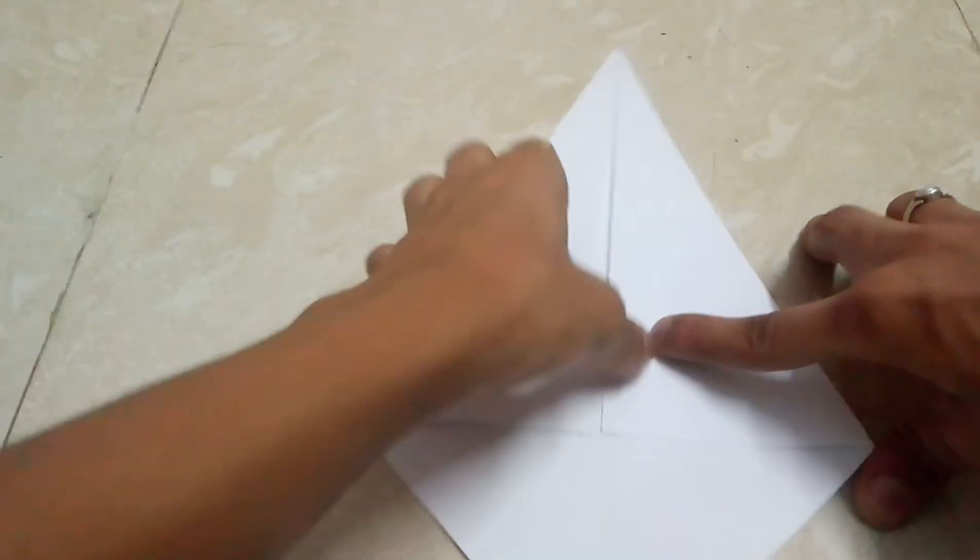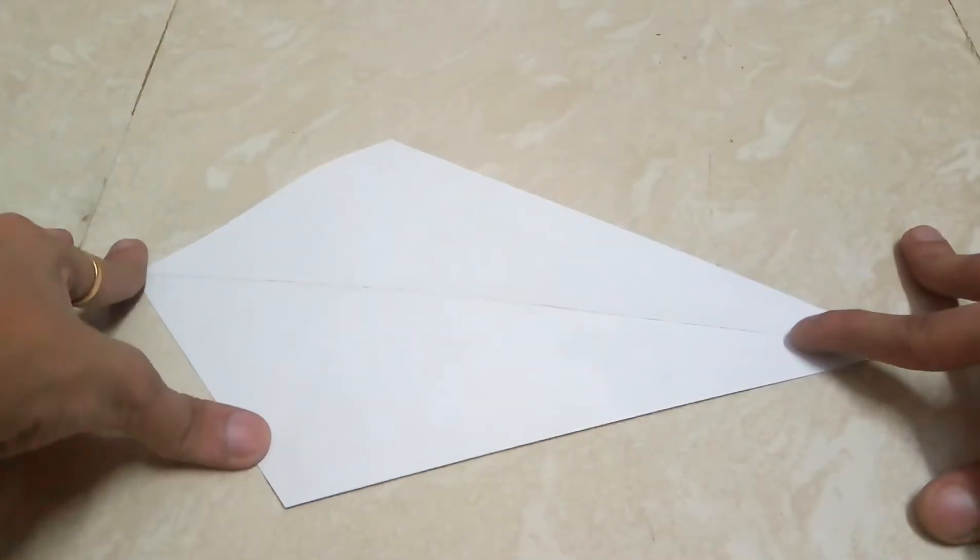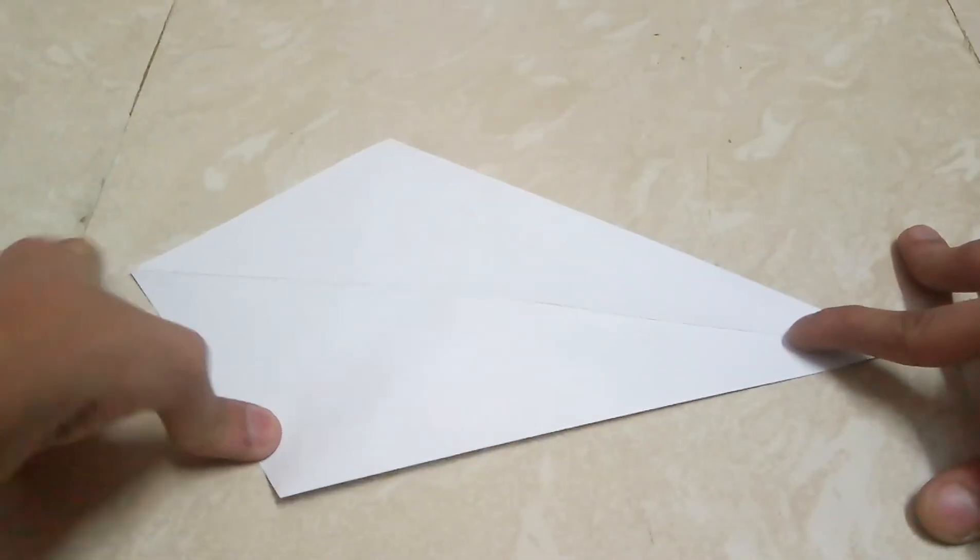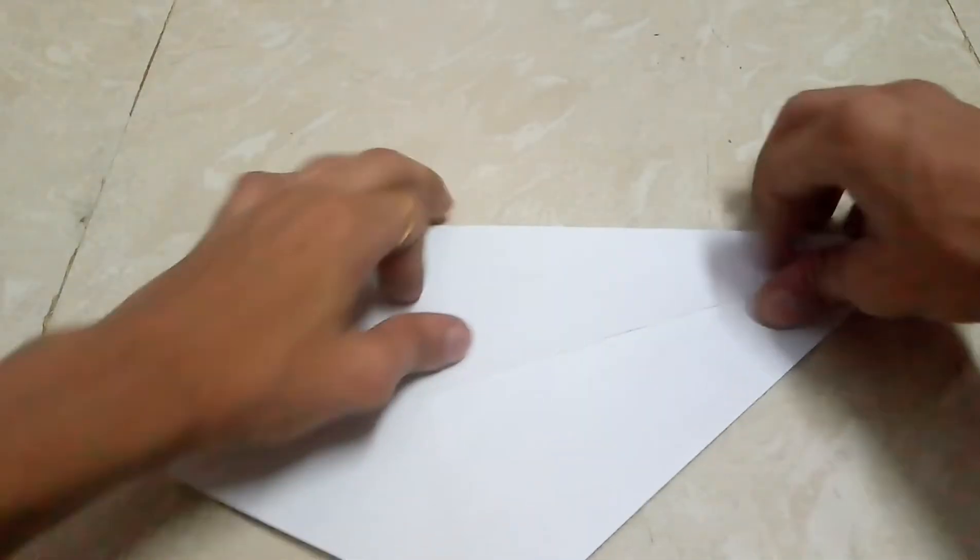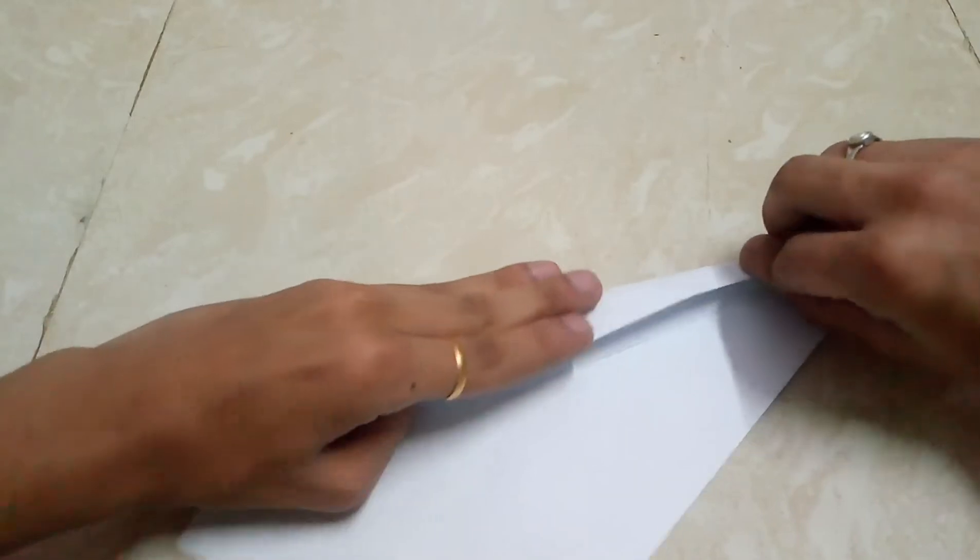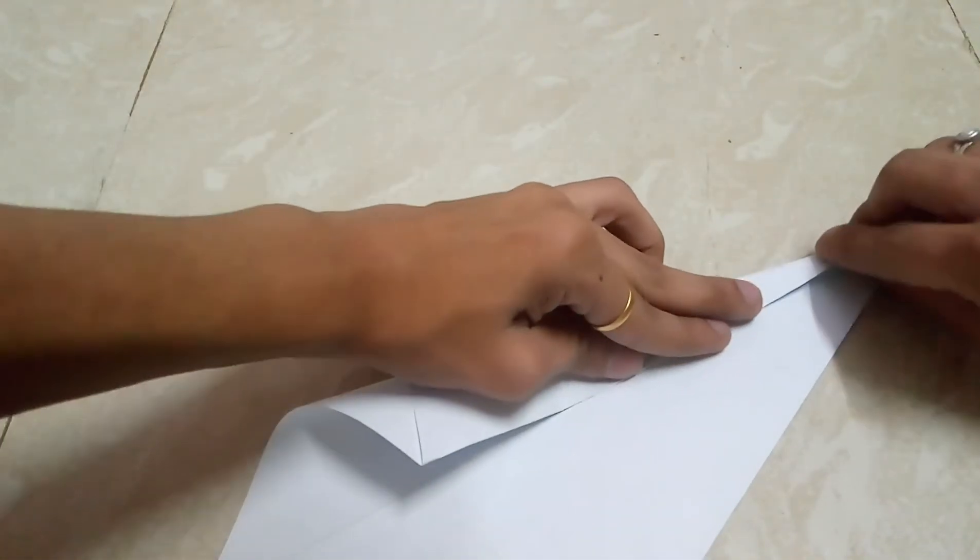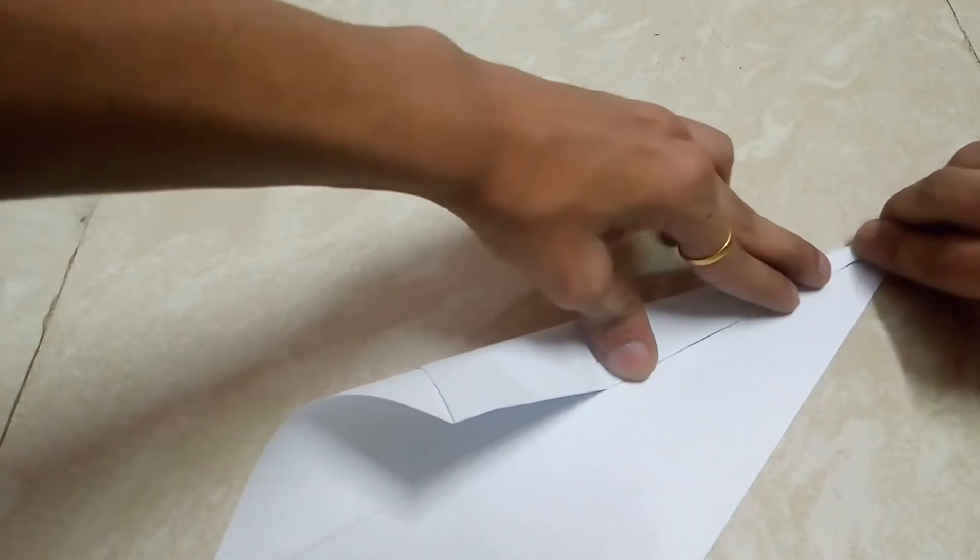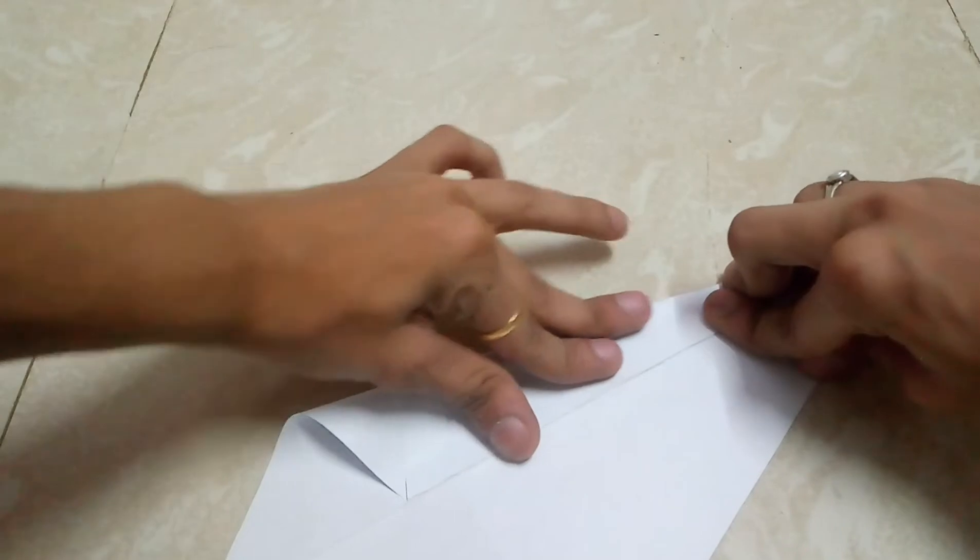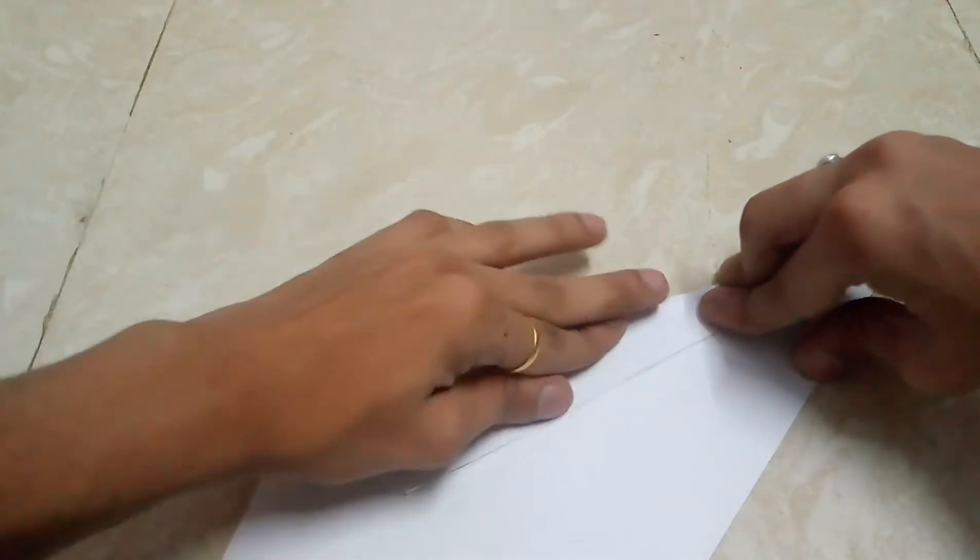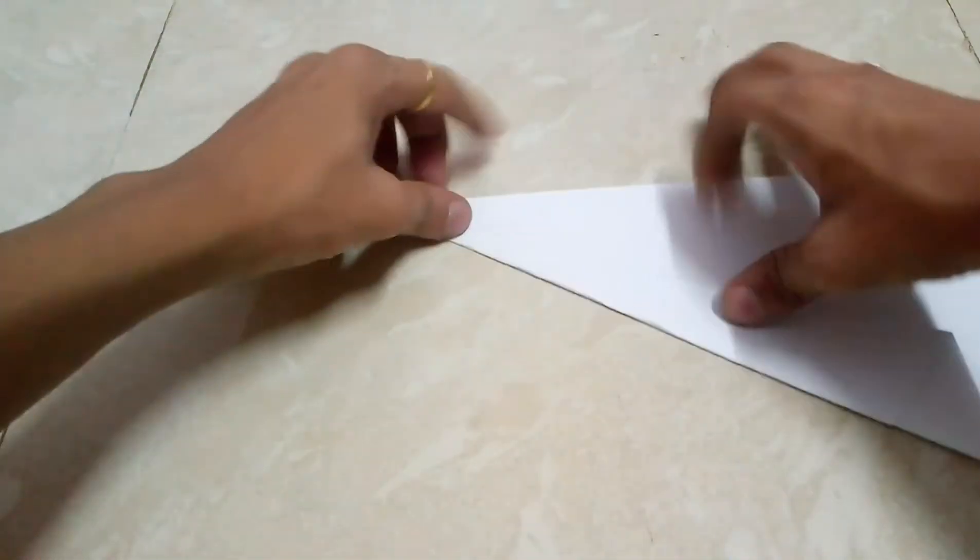After that just flip your paper and do the same process on this side also. And then just take this line up to the middle line. Just like this. And for the opposite, do the same.